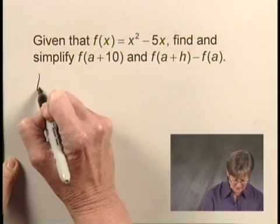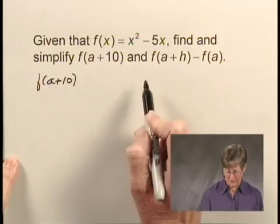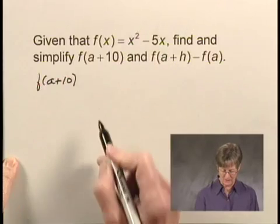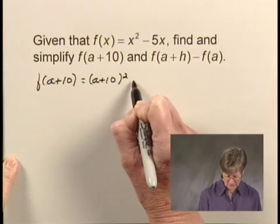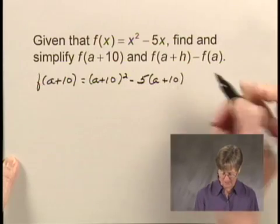Well, we'll start with f of a plus 10, and we will substitute a plus 10 where x appears in this function. So we'll write this as a plus 10 squared minus 5 times the quantity a plus 10.